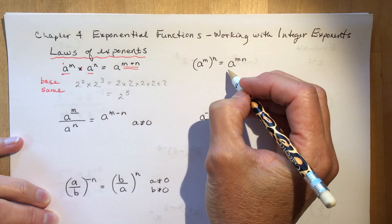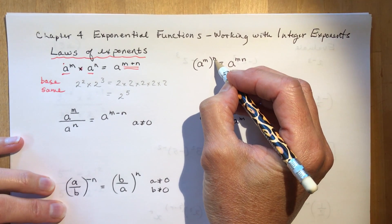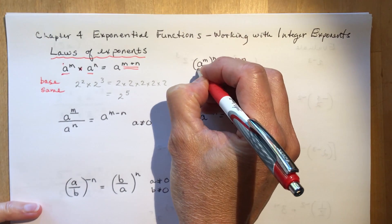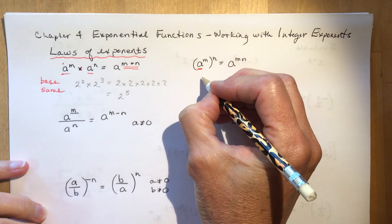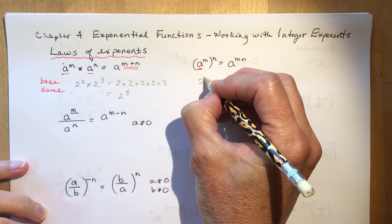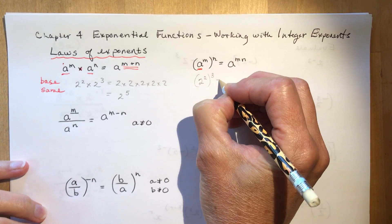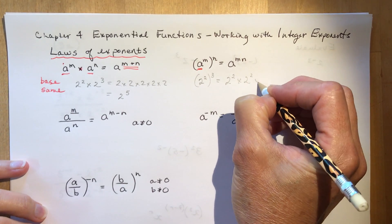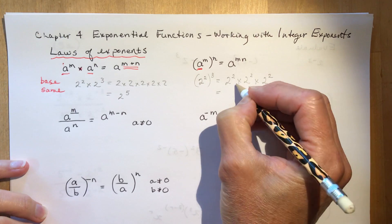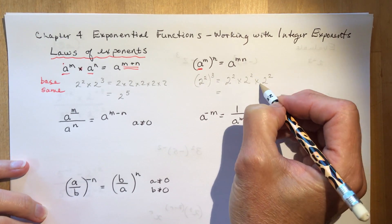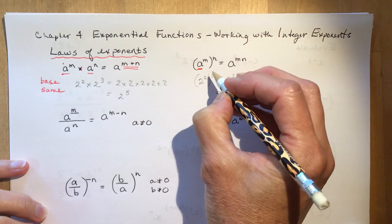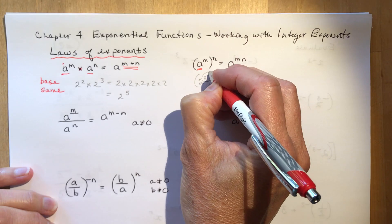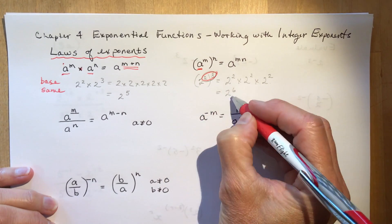If you have a to the m, to the power of n, that's the same as a to the m times n. So if we had two squared and then cubed, that means we're doing two squared three times. If you expand all those out, you'd have one, two, three, four, five, six of them. Power to a power — you multiply. That gives you the six.